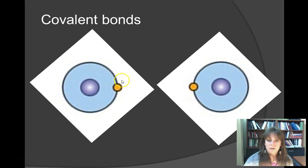We said these atoms can sometimes gain an electron or lose an electron to get to that stable number. But it turns out they have another option, and that option is to share electrons.